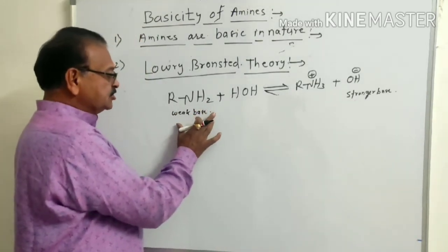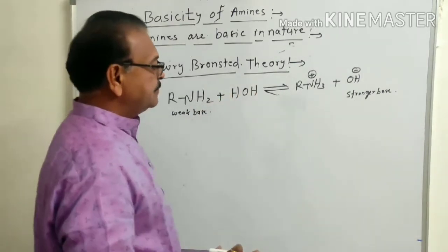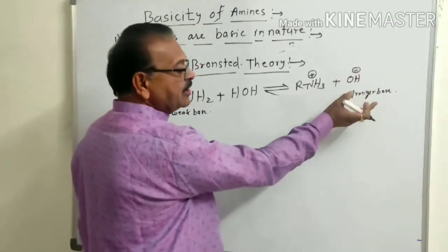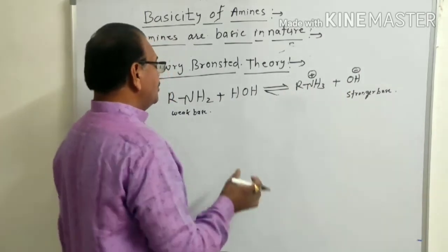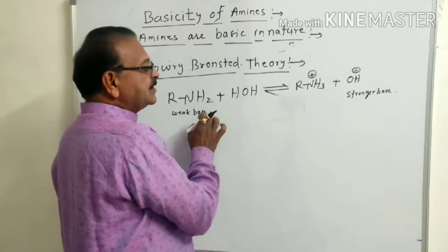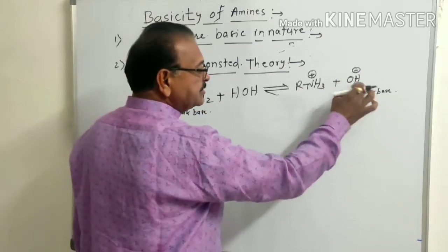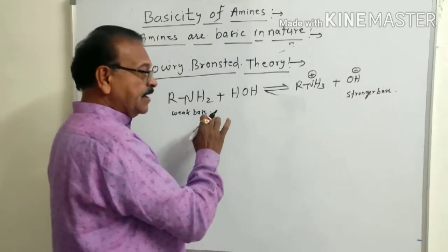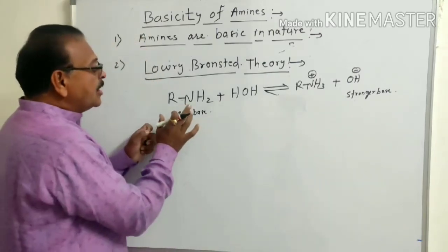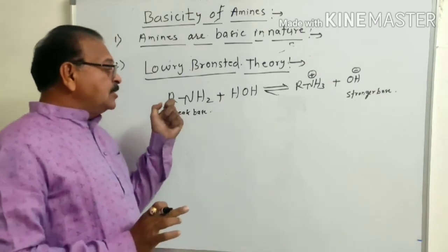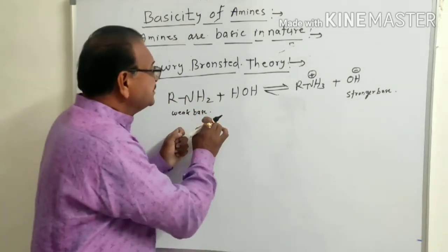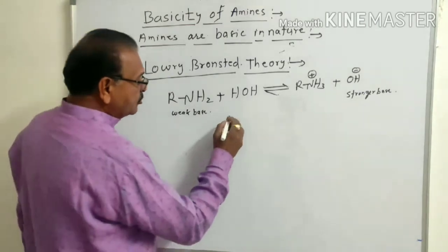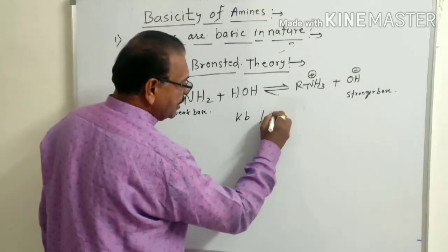When amines dissolve in water, we get alkyl ammonium ions and OH⁻ ions. The concentration of OH⁻ ions in aqueous medium is raised, therefore amines act as weak bases. Because they have greater affinity to attract the proton, this equilibrium shifts to the left. To better understand the basic nature of amines, we observe two values: Kb and pKb.